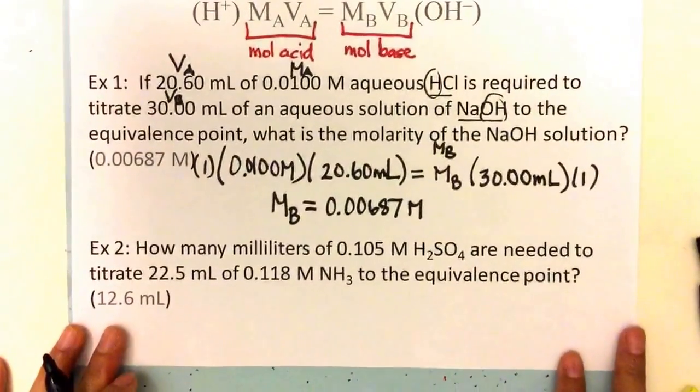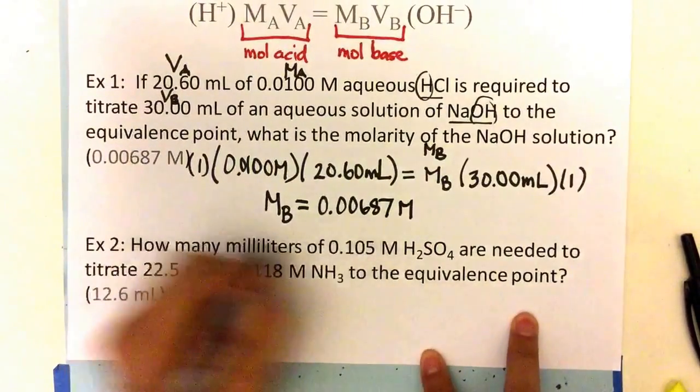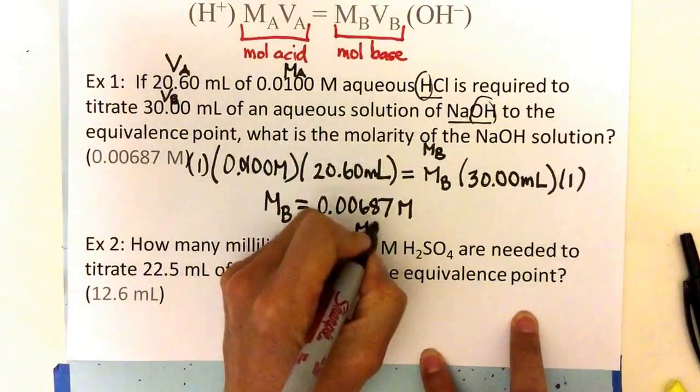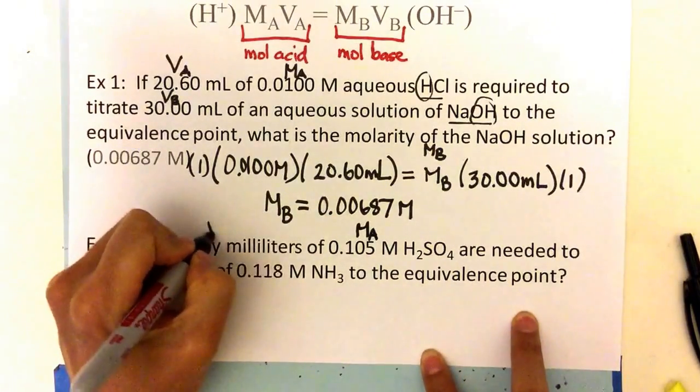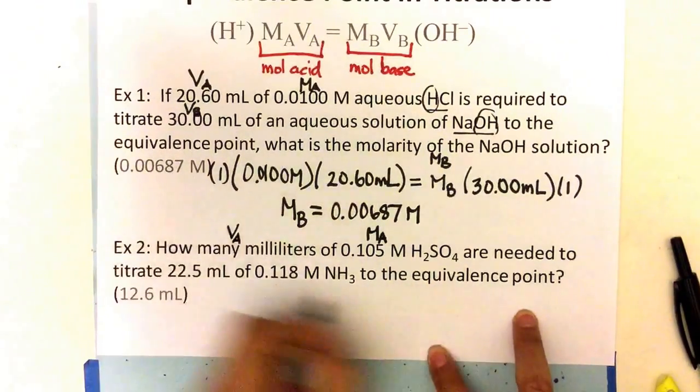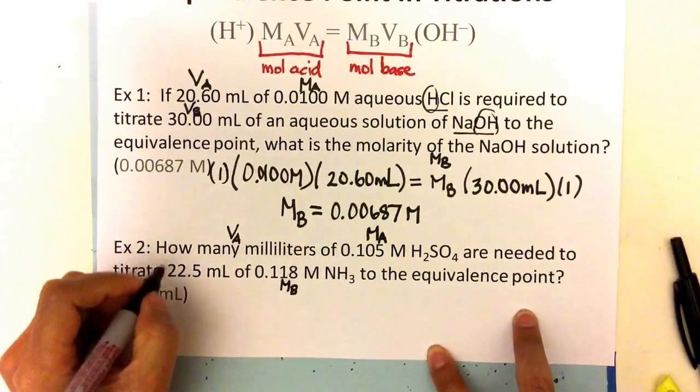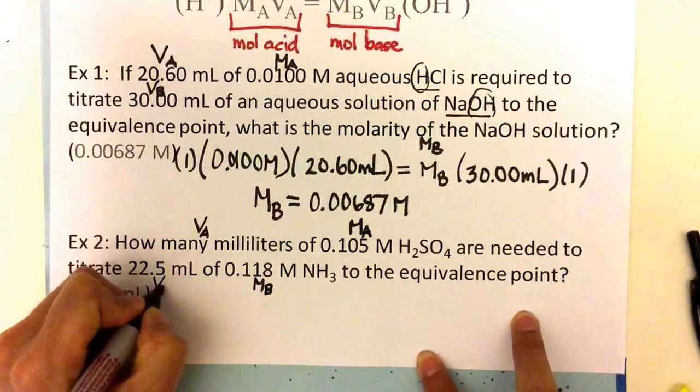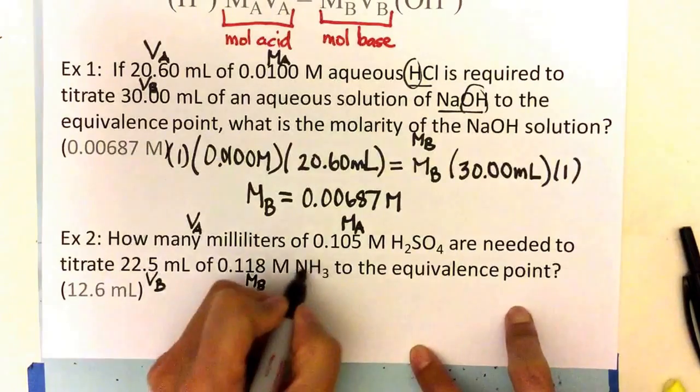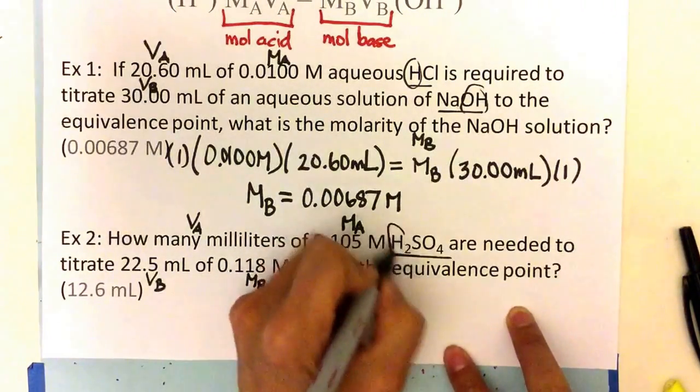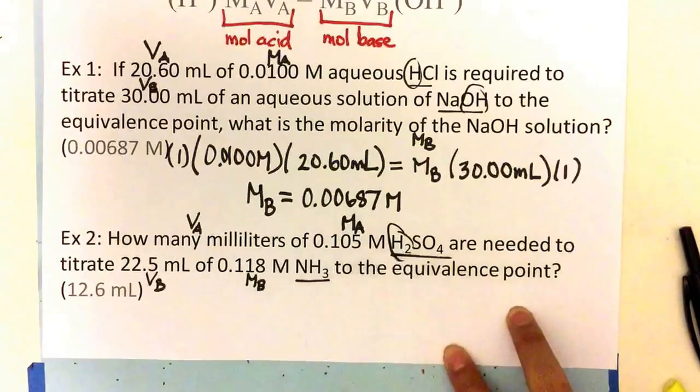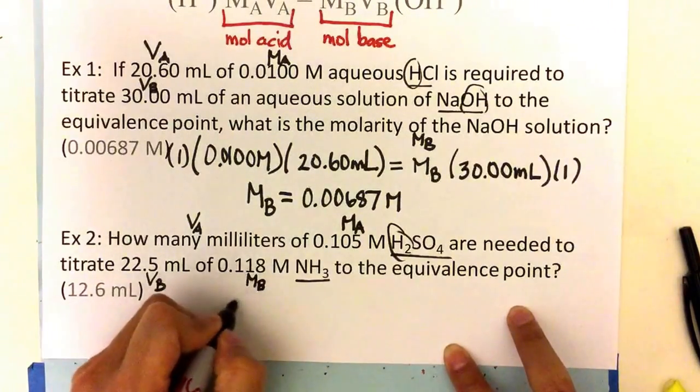Let's look at example two. In example two, I go through it. This is my acid, and so this is MA. I'm looking for my VA. Here's my molarity of my base, and here's my volume of my base. And this is my base. And here's my acid. Noticing that my acid is a diprotic acid. So let's go ahead and set up the problem.